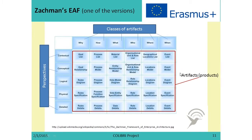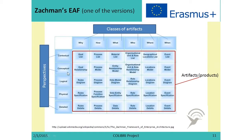In the middle of the Zachman framework there are artifacts of enterprise architecture. We can see that these artifacts can be classified according to why things happen, how they happen, what is involved in these activities in the company, who is involved in them, where they happen, and when. We can also represent this knowledge from different perspectives: contextual, conceptual, logical, physical, and detailed perspectives.